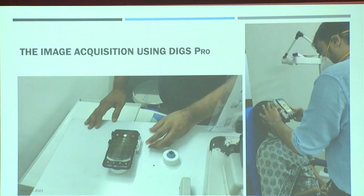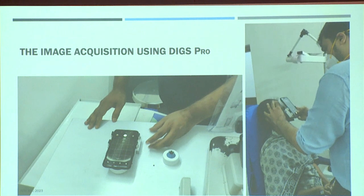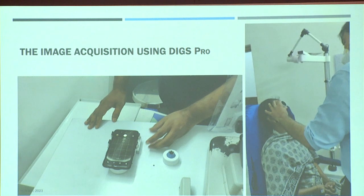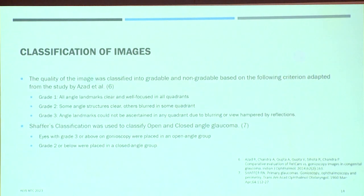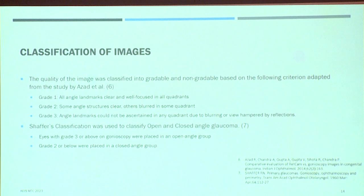With a single click, you can obtain 360-degree images if you are using a four-mirror or six-mirror gonio lens. The quality of the image was classified into gradable and non-gradable quality based on criteria adopted by Azad et al. for their ROP study, and Schaffer's classification was used to classify open and closed angle.